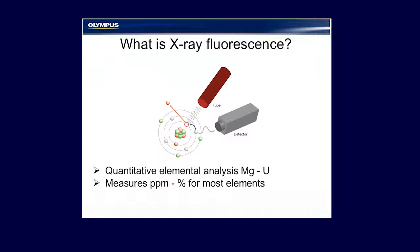So, what is X-ray fluorescence? Very simply put, X-ray fluorescence uses an excitation source to excite electrons within an atom. This excitation will eject an electron from its orbital, and there is a transition at that point from the next orbital, and this transition releases an amount of energy. This energy is directly proportional to the amount of that element within your sample.